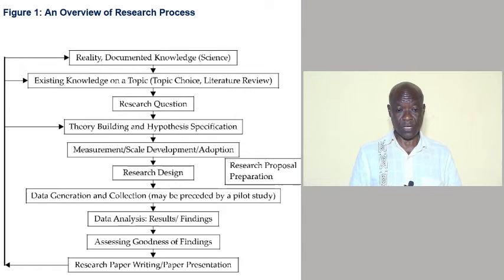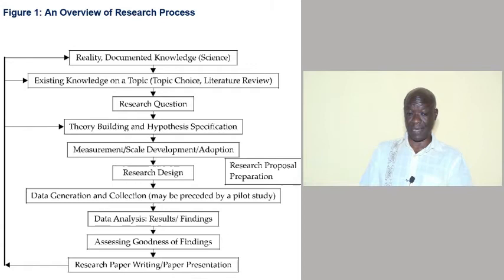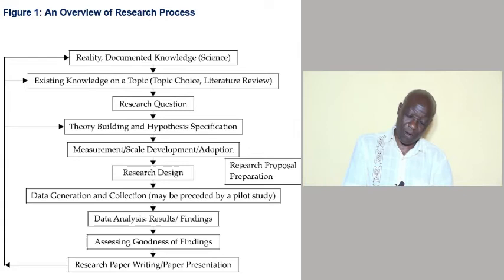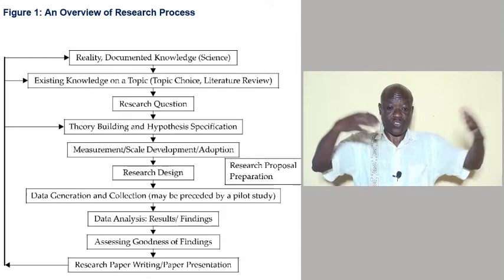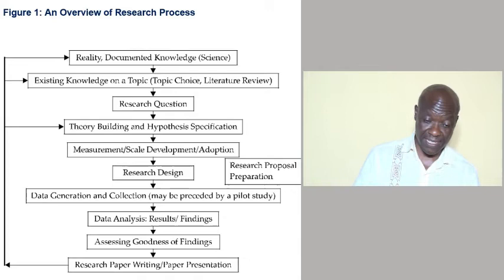The step following theory building is designing or adopting measurements for obtaining measures of the concepts in the conjectures to be verified, and specification of the research design for data collection. This involves specifying which data will be collected, from whom, what procedures will be used for data collection, and how the data will be analyzed. The next step is the actual implementation of the research design steps.